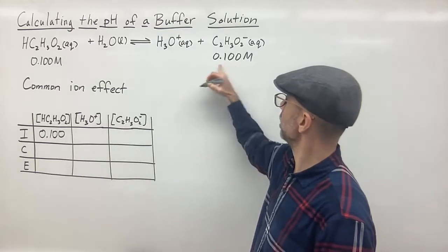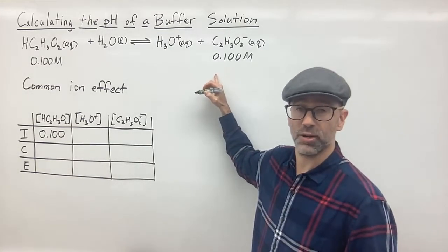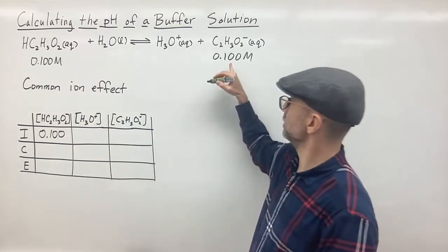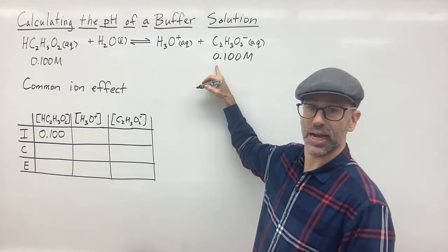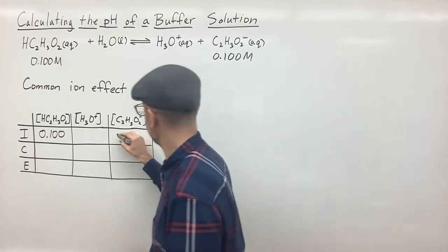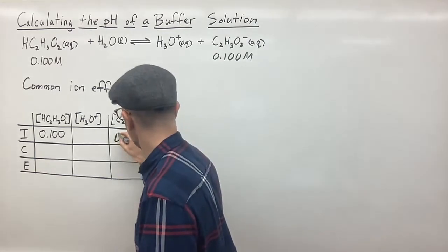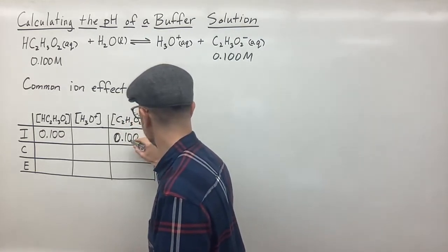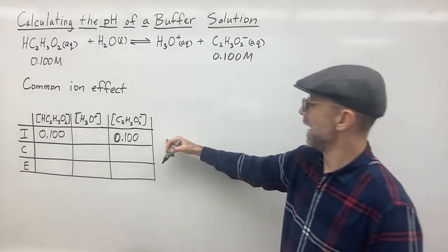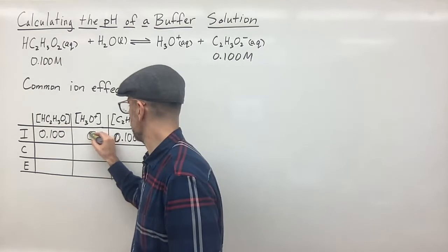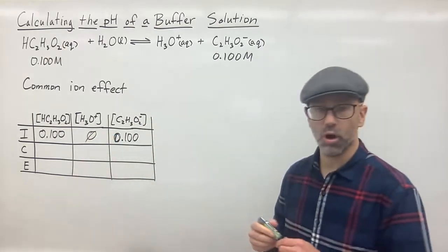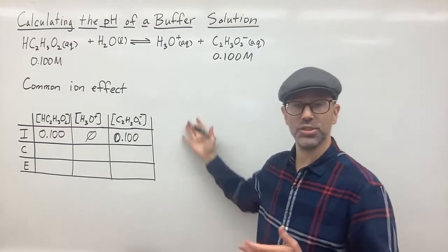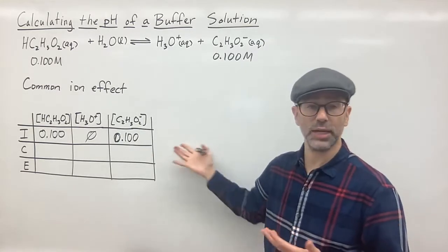So we initially start with 0.100 molar there. And we have here, normally this would be zero if we're just adding the acid to water. But in this case, we have the common ion acetate. So we're going to put that as an initial condition as well. So initially we start out with 0.100 molar of the acetate ion. And we have zero to begin with for our hydronium ion.